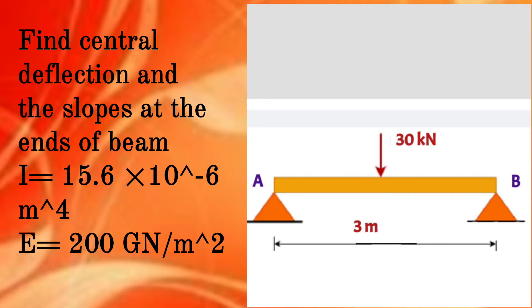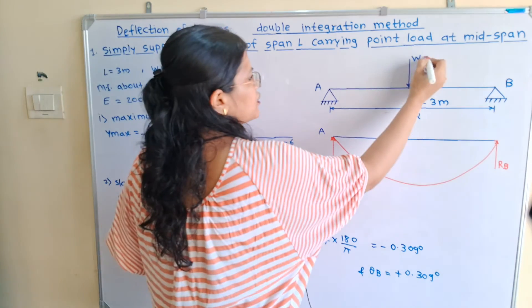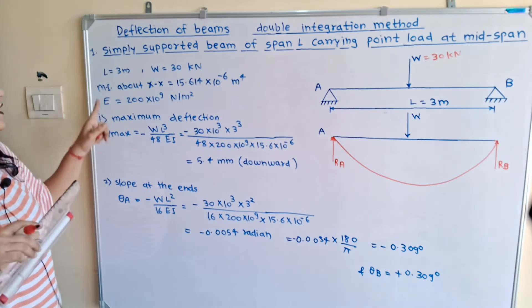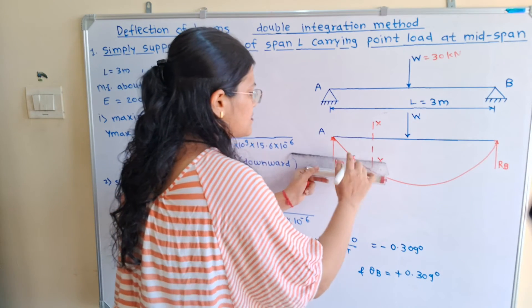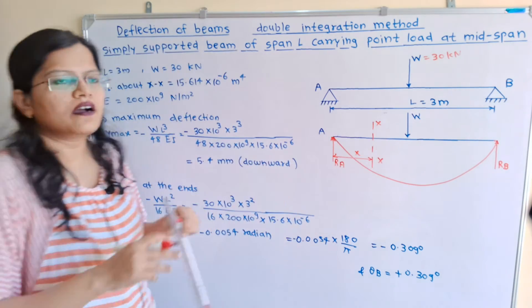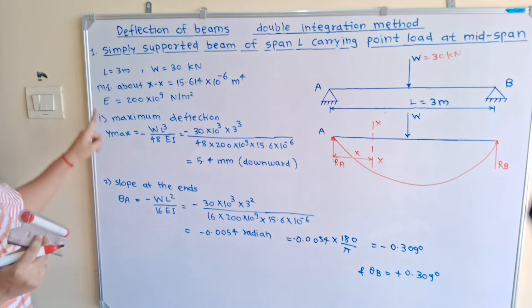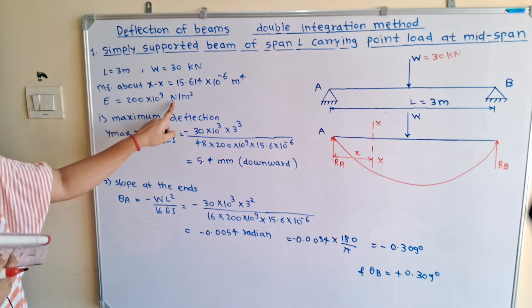Numerical problem: find central deflection and slope at the ends of a simply supported beam where W = 30 kN, L = 3 m, I = 15.6 × 10⁻⁶ m⁴, and E = 200 GN/m² (i.e., 200 × 10⁹ N/m²).